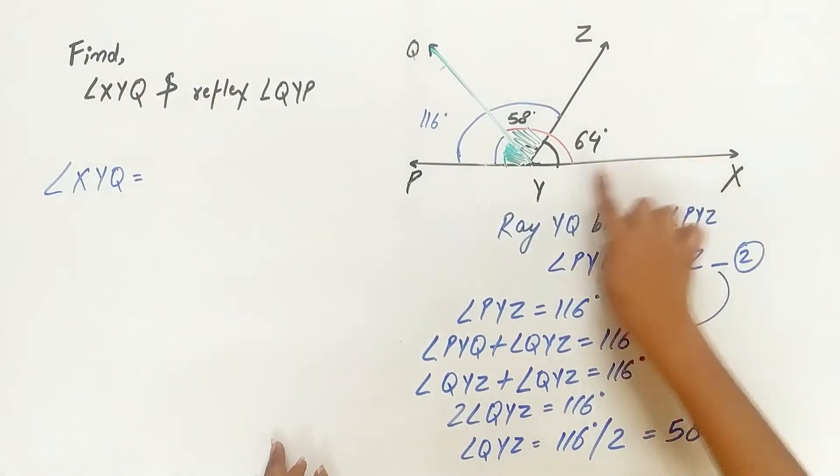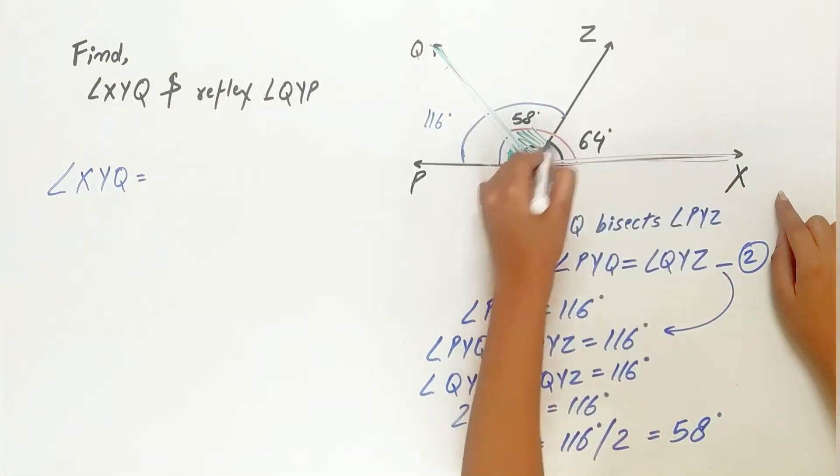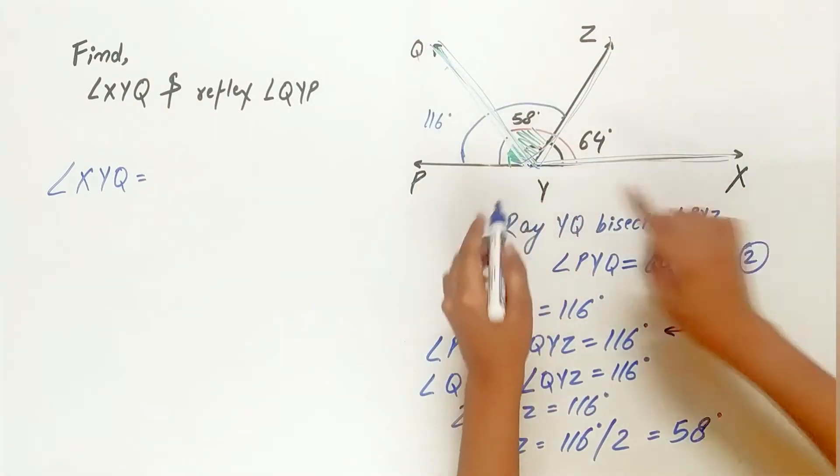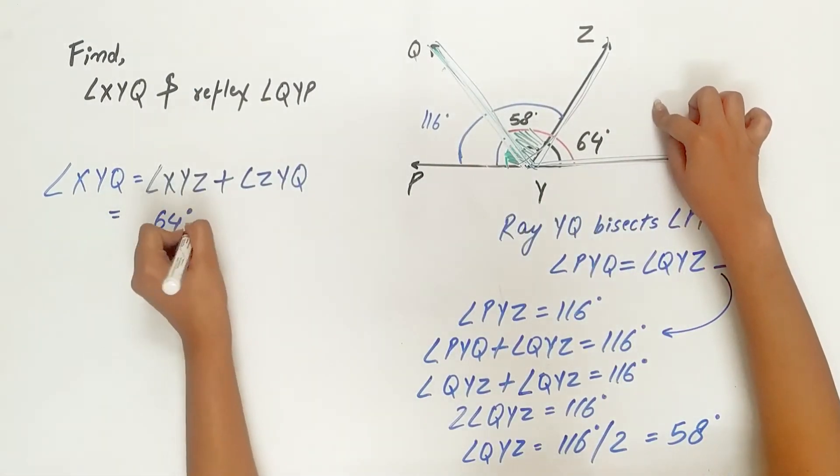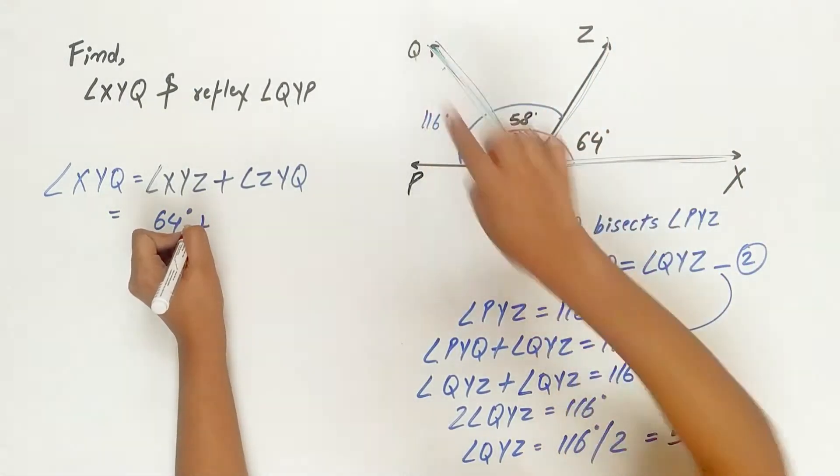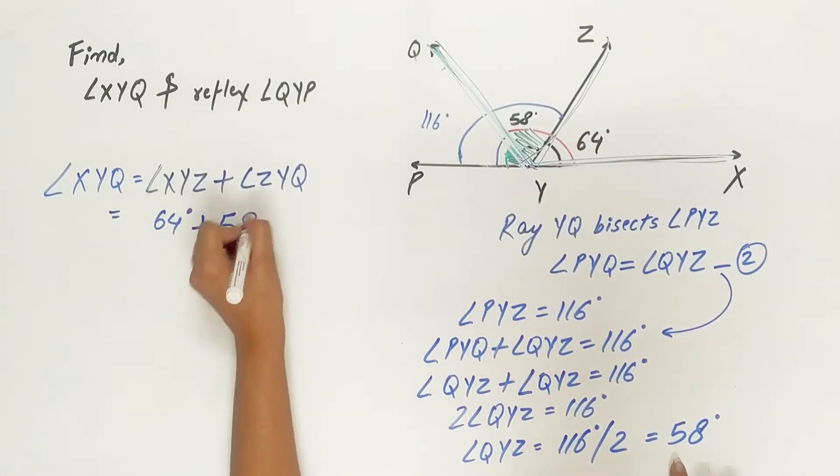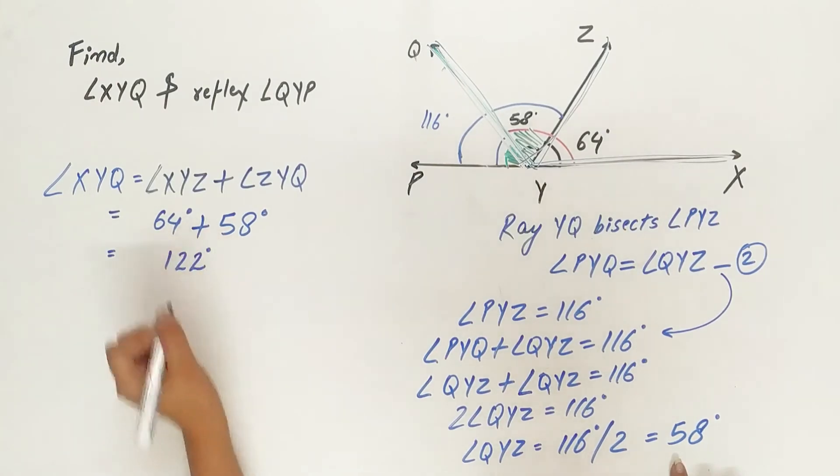Angle XYQ is equal to angle XYZ plus angle QYZ. Angle XYZ is 64 degrees and angle ZYQ is equal to 58 degrees. 64 degrees plus 58 degrees is 122 degrees.